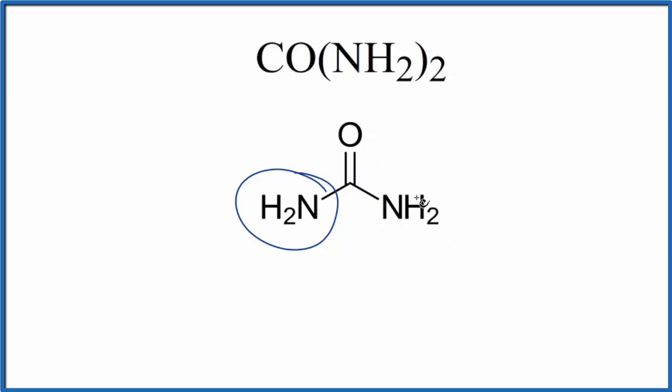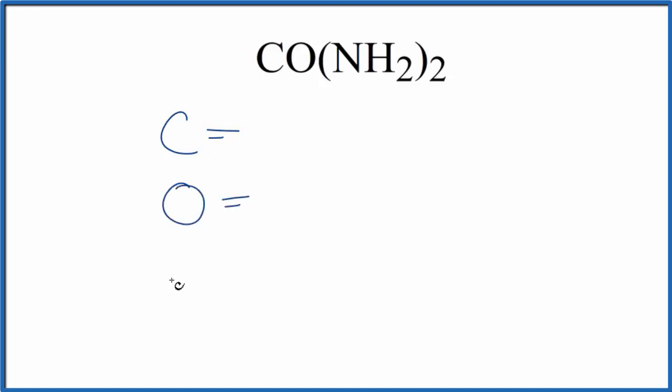So for urea, the first thing we want to do is write down each element. We have carbon, oxygen, nitrogen, and hydrogen. For carbon nothing's written, so we assume the subscript is one. Same for oxygen, put a one there.